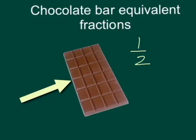As you can see, those three sections make it three out of a possible six sections in the whole bar. So I have three out of six, but I also have one out of two sections. These are called equivalent fractions.